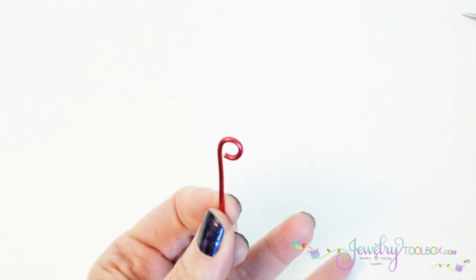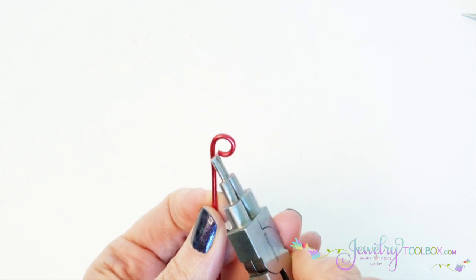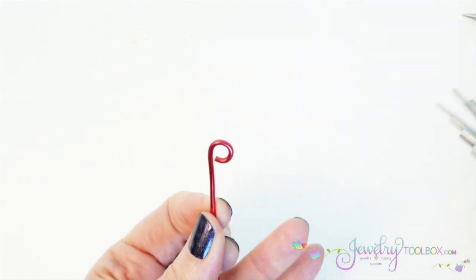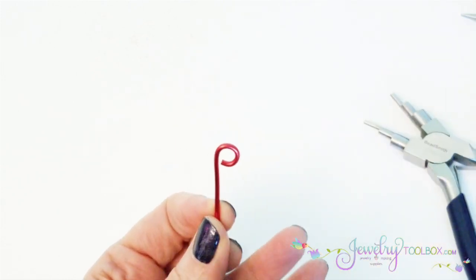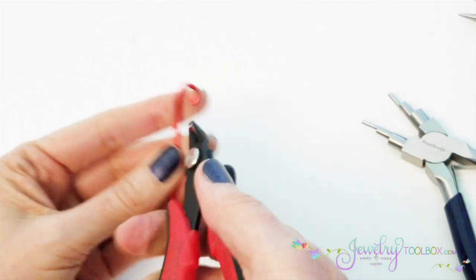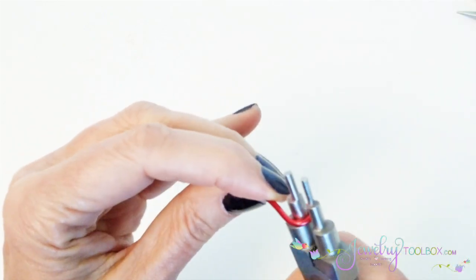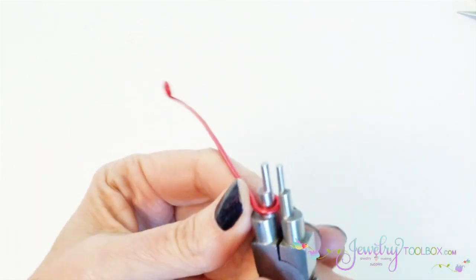You have a pretty perfectly round loop. Sometimes you'll find that this spot right here is sort of flat. You can just fix that by nipping it off and just put it back on the tool and push it around again.